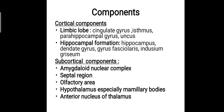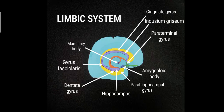In the subcortical components, it includes the amygdaloid nuclear complex, the septal region, the olfactory area, the hypothalamus — especially the mammillary body region — and the anterior nucleus of the thalamus.